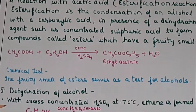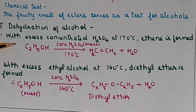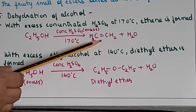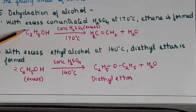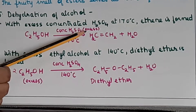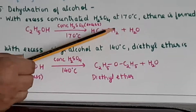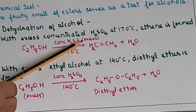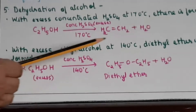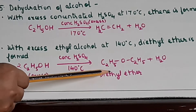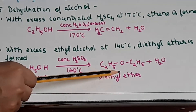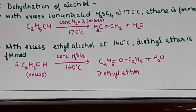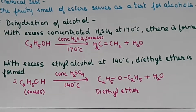The next reaction is dehydration of alcohol. We discussed this in the preparation of alkenes (laboratory method). Ethyl alcohol in presence of excess concentrated sulfuric acid at 170°C gives ethene plus water — that is dehydration of alcohol. If instead you use excess ethyl alcohol at 140°C, the product is an ether: diethyl ether, C2H5-O-C2H5, plus H2O.